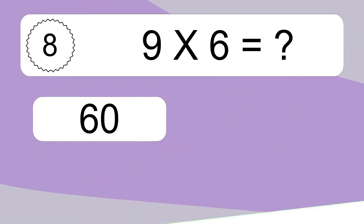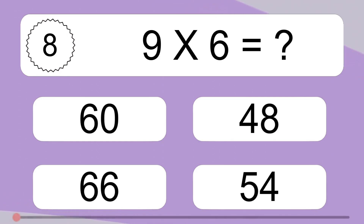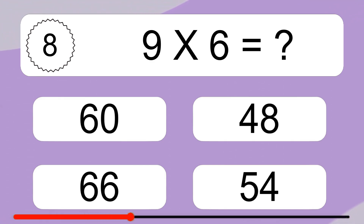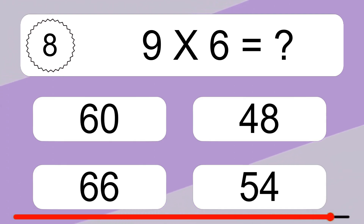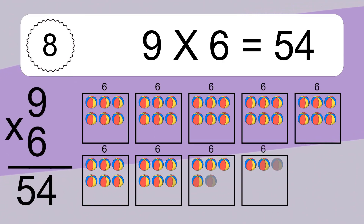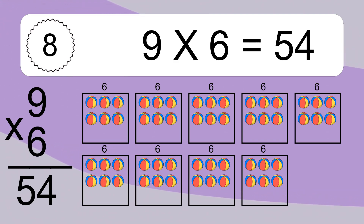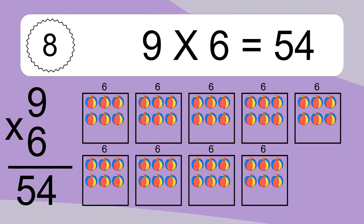9 times 6 equals what? 9 times 6 equals 54. We have 9 boxes, and each box has 6 colorful balls inside. If you count all the balls in all the boxes together, you will have 9 times 6 balls. This equals 54 balls.